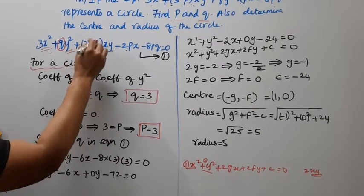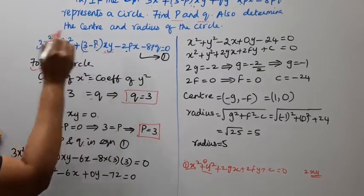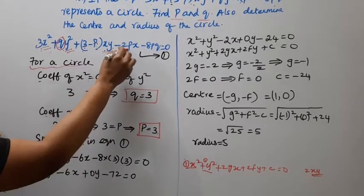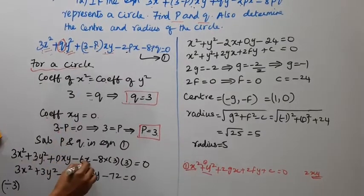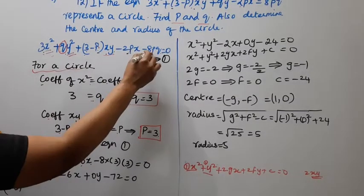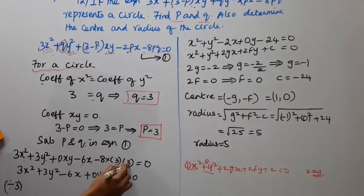Substituting: 3 minus p where p is 3 gives 3 - 3 = 0, so 0xy. And p value is 3, so 2 times 3 = 6, minus 6x. Minus 8pq: p is 3, q is 3, 3 times 3 equal to 0.